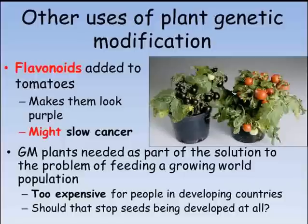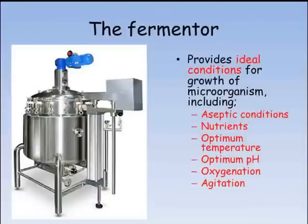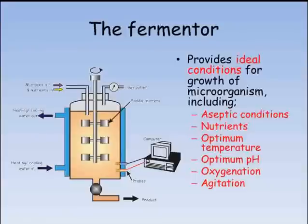Once we have a microorganism we want to grow, we need to be able to supply the ideal conditions for it. This is achieved in a fermenter. A fermenter is a sealed vessel which allows the conditions inside to be tightly controlled. The first thing to do is to sterilize the container so the only microorganism inside is the one you want to grow.